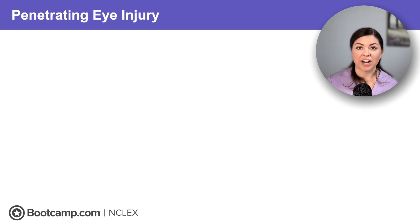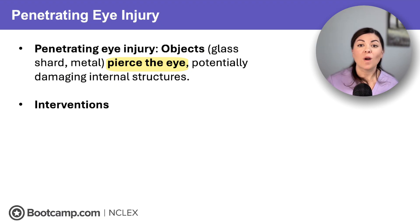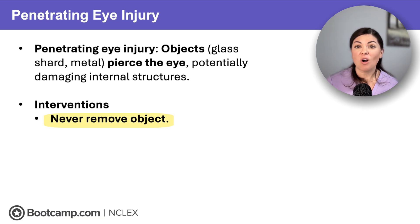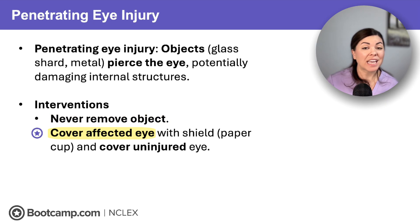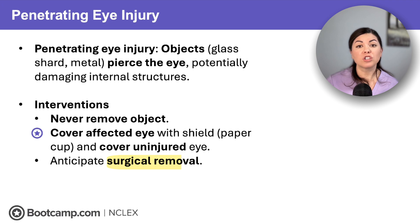Next is penetrating eye injury. This occurs when an object like glass or metal pierces the eye and can damage internal structures. All interventions focus on preventing further injury. First, never remove the object — this can cause further damage to ocular structures. We should cover the affected eye with a shield (even a paper cup works) and cover the uninjured eye too. Remember, our eyes move together, so we should cover both eyes to prevent any ocular movement. Surgery is expected as the only way to safely remove the object.